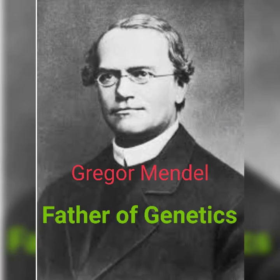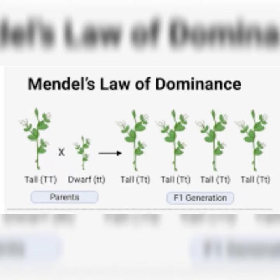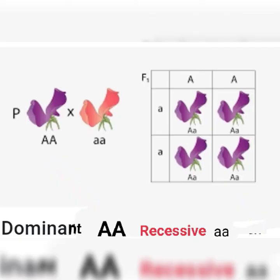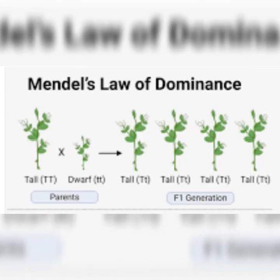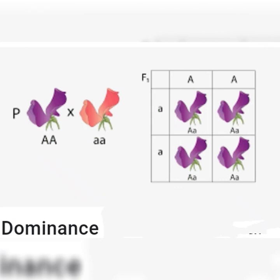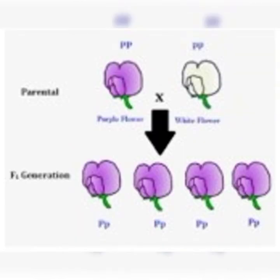Mendel's generalizations of the results of these breeding experiments are summarized under 3 laws. Number 1 is the Law of Dominance. In this, out of a pair of contrasting characters present together, only one is able to express itself while the other remains suppressed. The one that expresses is the dominant character and the unexpressed one is the recessive. The recessive character can express only when both members of the pair are recessive. For example, purple flower is dominant and white is recessive — only the purple character will be shown because purple is dominant.